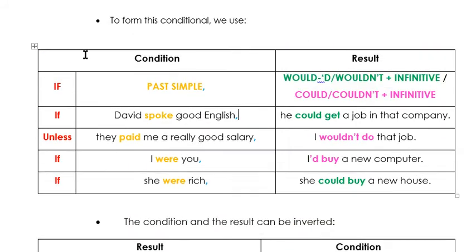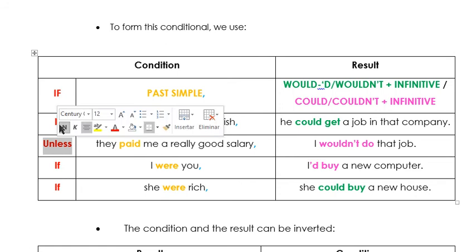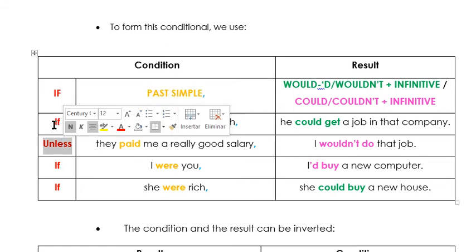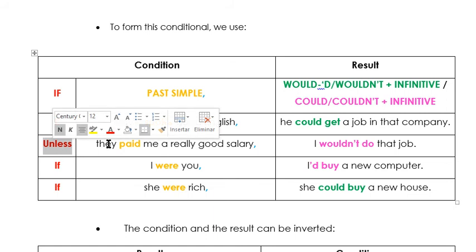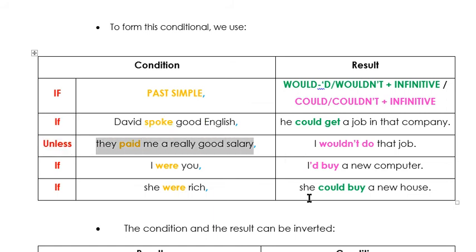We can also find 'unless' instead of 'if' — podemos encontrar 'unless' en vez de 'if', como ya habíamos visto en zero and first conditional. For example: unless they paid me a really good salary, I wouldn't do that job. Recuerden, cuando tenemos 'unless', la oración tiene que estar en afirmativo. 'Unless they paid me' — here we have past simple — 'I wouldn't do that job' — we have 'wouldn't', the negative form of 'would', and the verb in the infinitive.